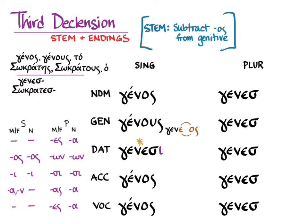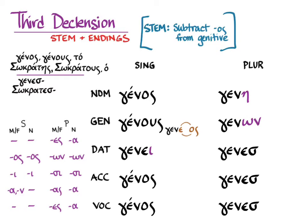The same thing happens in the dative singular: instead of γενεσί you get γένει. Instead of γένεσσα in the nominative plural, the intervocalic sigma drops out, the epsilon and alpha contract, and you get γένη. In the genitive plural, again the intervocalic sigma drops out, the epsilon and omega contract, and you get γενῶν. In the dative plural, instead of a double sigma, one drops out and you get γένεσσι. The accusative plural and vocative plural behave the same way as the nominative plural.